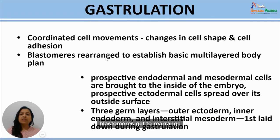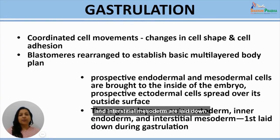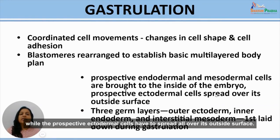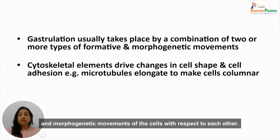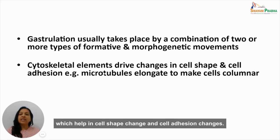During gastrulation, blastomeres get rearranged to establish a multi-layered body plan. After gastrulation, the three germ layers — the outer ectoderm, the inner endoderm, and the interstitial mesoderm — are laid down. Prospective endodermal and mesodermal cells are brought inside the embryo while prospective ectodermal cells spread over its outside. Cytoskeletal elements play an important role, driving cell shape and adhesion changes; for example, microtubules generally elongate, making cells columnar during gastrulation.